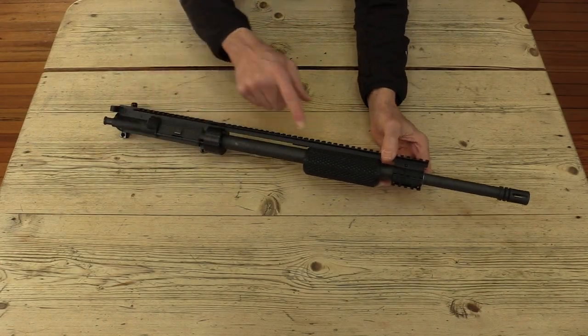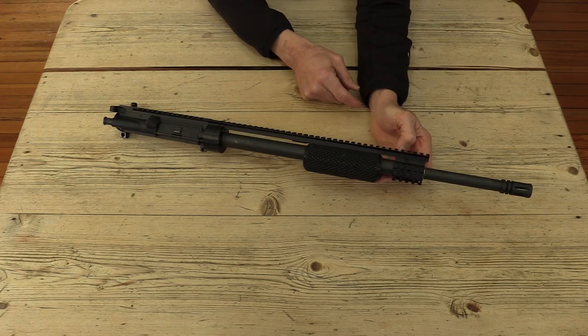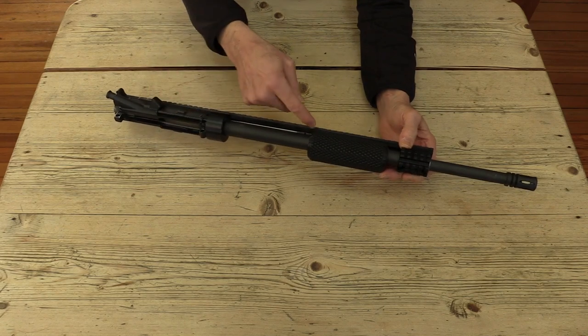To summarize, a completed upper assembly consists of the push grip, modified gas block, full-length picatinny rail, aft support and aft support cover, and the push rod.